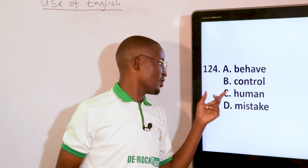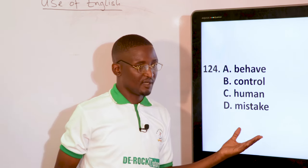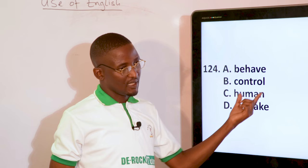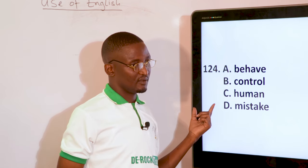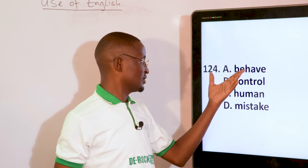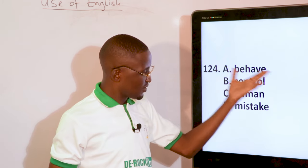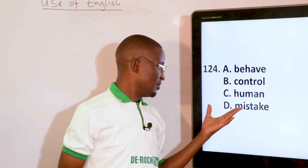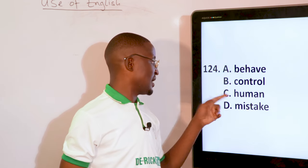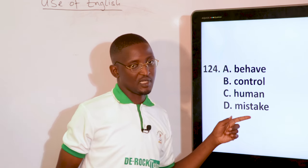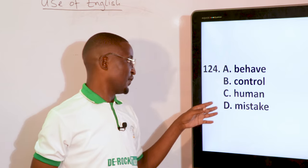BEHAVE, CONTROL, HUMAN, MISTAKE — HUMAN is having a different stress pattern from the others. BEHAVE and CONTROL carry second syllabic stress; MISTAKE is also second syllabic. But HUMAN has first syllabic stress. So it is the odd one of the four.